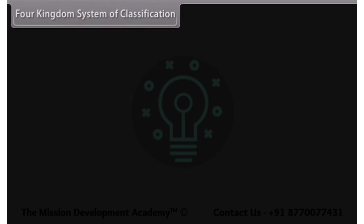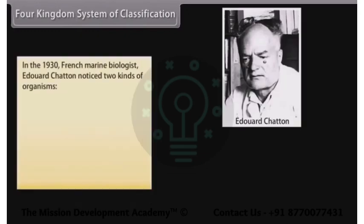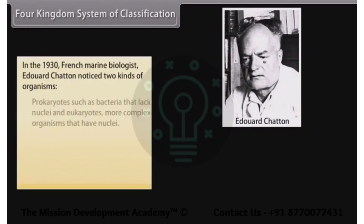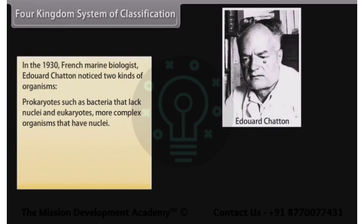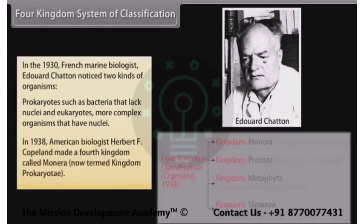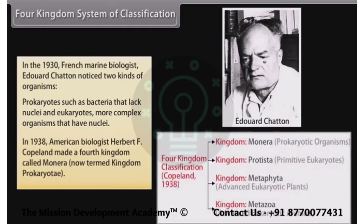In the Four Kingdoms System, in the 1930s French marine biologist Edward Chatton noticed two kinds of organisms: prokaryotes, such as bacteria, that lack nuclei, and eukaryotes, more complex organisms that have nuclei. In 1938, American biologist Herbert F. Copeland made a fourth kingdom called Monera, now termed kingdom Prokaryote.